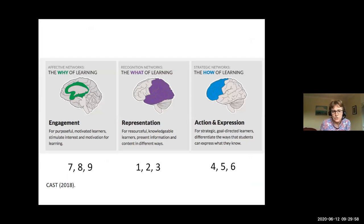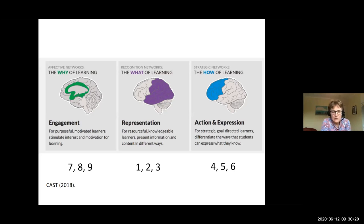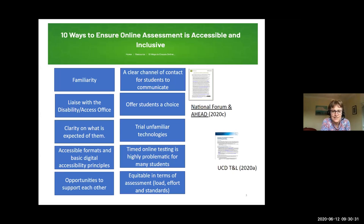I'll draw on Universal Design for Learning, which features multiple means of engagement — the 'why' of learning — multiple means of representation, the 'what' of learning, and action and expression, the 'how' of learning, with nine guidelines across those areas. When COVID-19 came in, we were all thrown up in the air about how to go online. UCD is a very large campus-based university, so this was new to a lot of people.